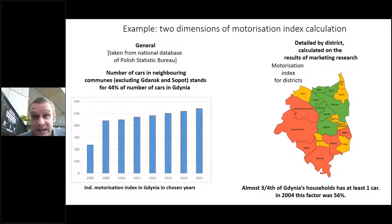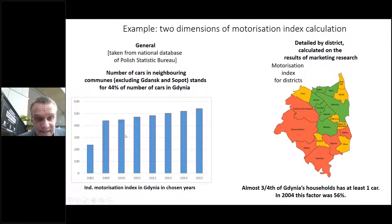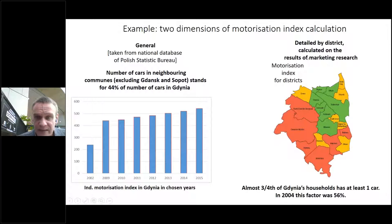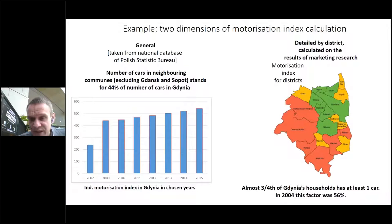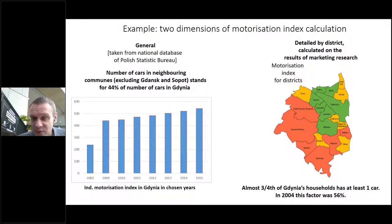One of the easiest data we can collect is the number of cars in the city, usually transformed into an individual motorization index. But this is only output data — it just brings information about the number of cars and is an illustration of complex processes. If we dive into district level, we can discover that some districts are more car-dependent than others. But this is output — we cannot see the real structure of the underlying processes.